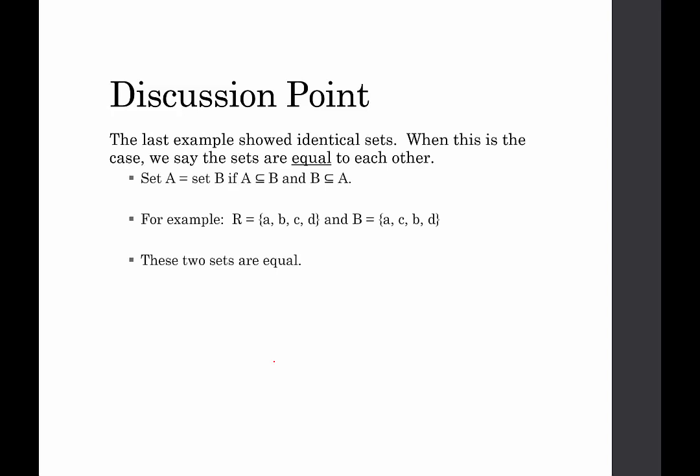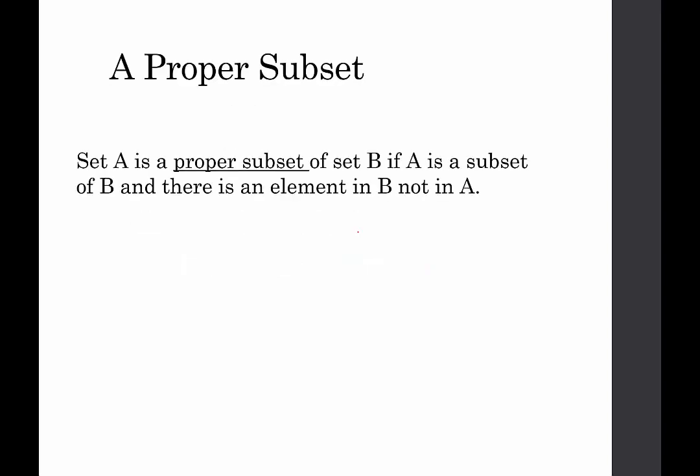So what we would say is that these sets are equal to each other. So when the sets are identical, when they have the exact same elements, and one of them doesn't contain anything that's not in the other one, then we would say those sets are equal to each other. So we would say that A is a subset of B and B is a subset of A. If that's true, then the sets are equal to each other. So if set R is {a, b, c, d} and set B is {a, c, b, d}, we would say that R is equal to set B. You might think that equal and equivalent could mean the same thing, but here in set theory, equal and equivalent are not the same thing.